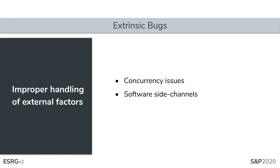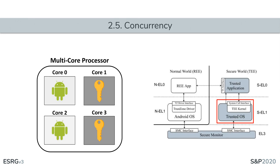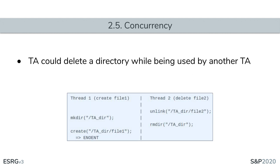Extrinsic bugs are caused by the improper handling of external factors. An example is a concurrency issue in the OP-TEE trusted OS, which failed to correctly handle simultaneous execution of two trusted applications accessing the file system. OP-TEE allows simultaneous execution of applications by leveraging multiple cores, and by allowing two applications to simultaneously access the file system, it was subject to a race condition in which a running trusted application could delete a file system directory that another was accessing, potentially causing loss of security-sensitive data.